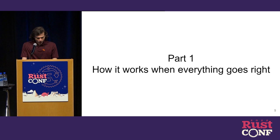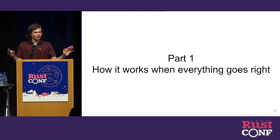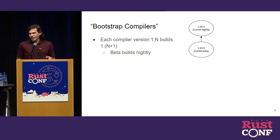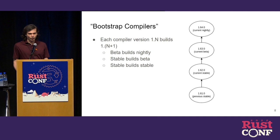There are three parts of this talk. The first part is how we want things to work, how they should work, how we hope they work. When I say an older version, the Rust compiler always uses the immediate previous version. For example, nightly is built with beta, beta is built by stable, and stable is built by the previous stable. It goes back in the chain one at a time.